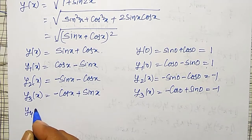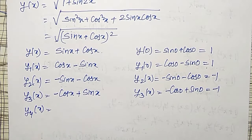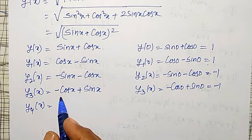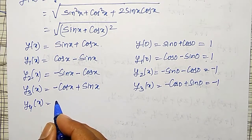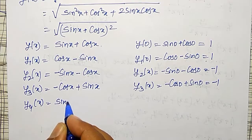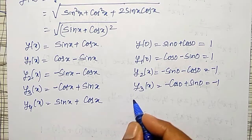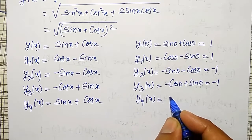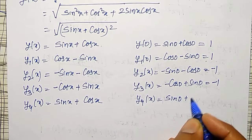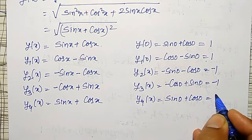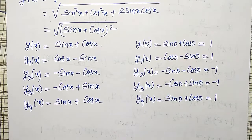Like that, fourth derivative, I can find out y4 at x is equal to, differential will become simple now. Therefore minus, differential of minus cos x will become plus sin x, plus differential of sin x will become cos x. Therefore my y4 of x at 0 is sin 0 plus cos 0, which is equal to 1. All these values I will substitute in the series.